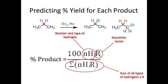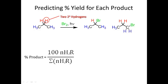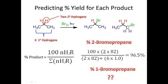Let's calculate the percentage of 2-bromopropane, where the secondary hydrogen gets abstracted. We have two secondary hydrogens and six primary hydrogens. Plugging in: the reactivity factor for bromine at a secondary site is 82, so the numerator is 2 × 82. The denominator is (2 × 82) + (6 × 1), since the reactivity factor for primary hydrogens is 1. This gives 96.5% yield for 2-bromopropane, meaning 1-bromopropane is formed in only 3.5% yield.